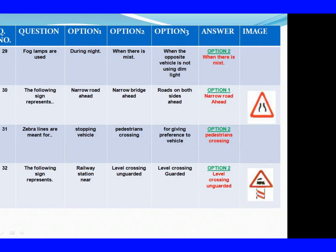Question 29: Fog lamps are used. Option 1: During night. Option 2: When there is mist. Option 3: When the opposite vehicle is not using dim light. The right answer is Option 2: When there is mist. Question 30: The following sign represents. Option 1: Narrow road ahead. Option 2: Narrow bridge ahead. Option 3: Roads on both sides narrow ahead. The right answer is Option 1: Narrow road ahead.